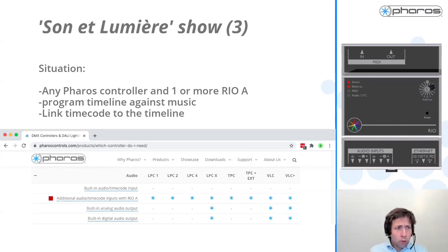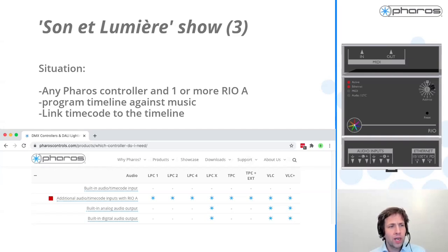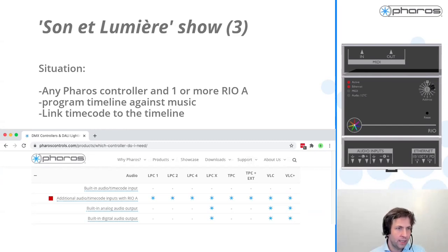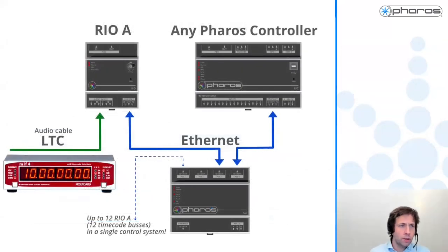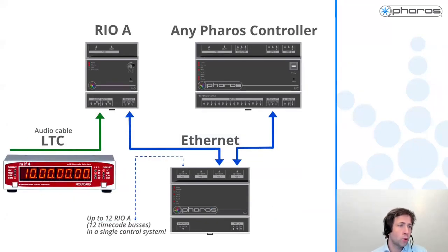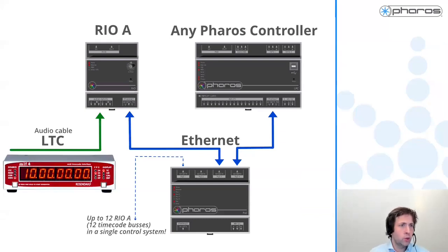As we can find on our website in the 'which controller do I need' section - under Products, you can scroll down and see: I want to use timecode. None of our controllers support that natively, but all of our controllers can do that by adding a Rio A to the system. In an installation like this, I have a Rio A, I connect that via Ethernet to my controller. And there needs to be some sort of timecode generator that is connecting via audio to the audio inputs of the Rio A.